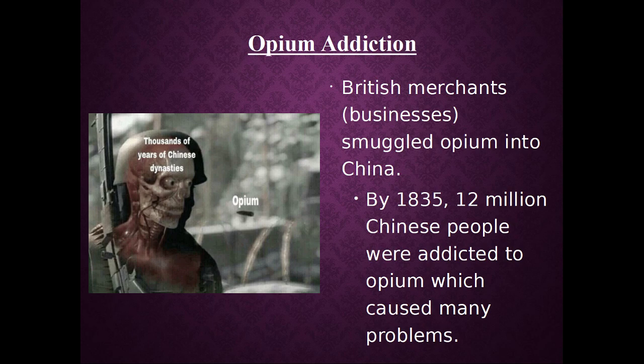Drugs. Britain decided this was the best way to do it. British merchants came up with this genius plan: all we have to do is get the Chinese populace addicted to opium. Because when people want drugs, they'll sell a lot of stuff. China did not like opium. So the Chinese government actually outlawed bringing opium into China, outlawed the sale of opium, and outlawed doing opium.